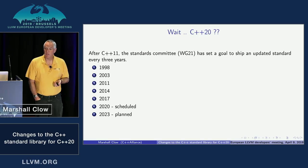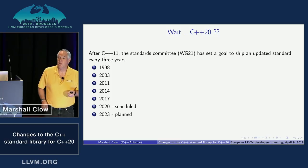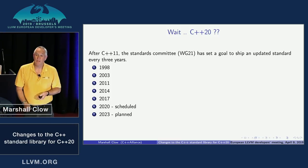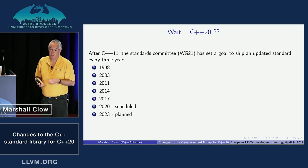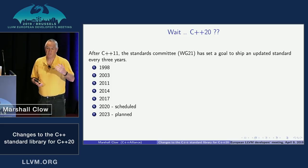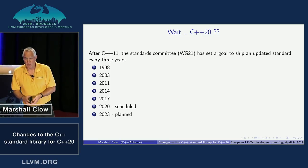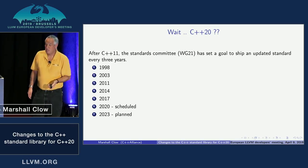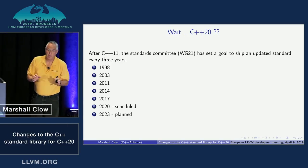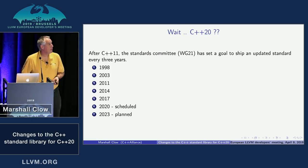After 2020, there'll be another release in 2023. The model Herb Sutter uses as convener is the train model — the train leaves every three years. Stuff that's ready will be on the train; stuff that's not ready will wait for the next one three years out. The idea is you don't shove stuff in just because there's a release now.